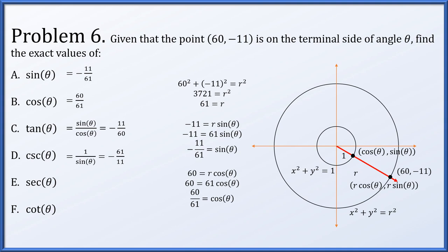Now that we know sine and cosine, everything else follows quickly. The tangent is sin/cos = −11/60. The cosecant is 1/sin = −61/11. The secant is 1/cos = 61/60. And the cotangent is cos/sin = −60/11.